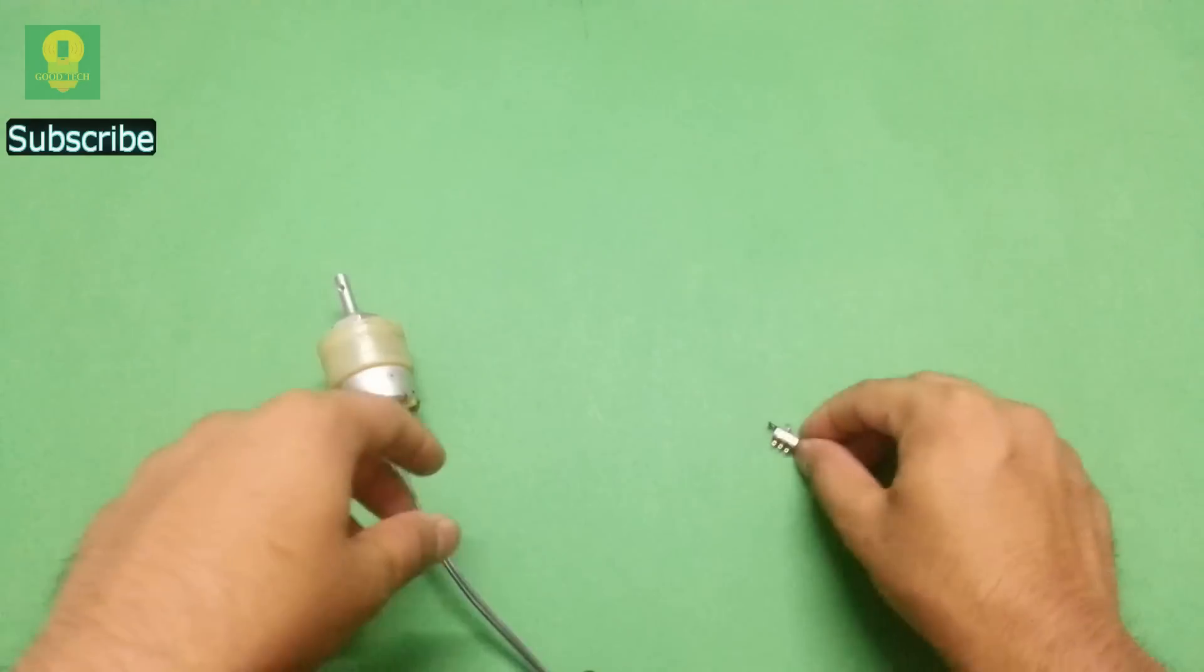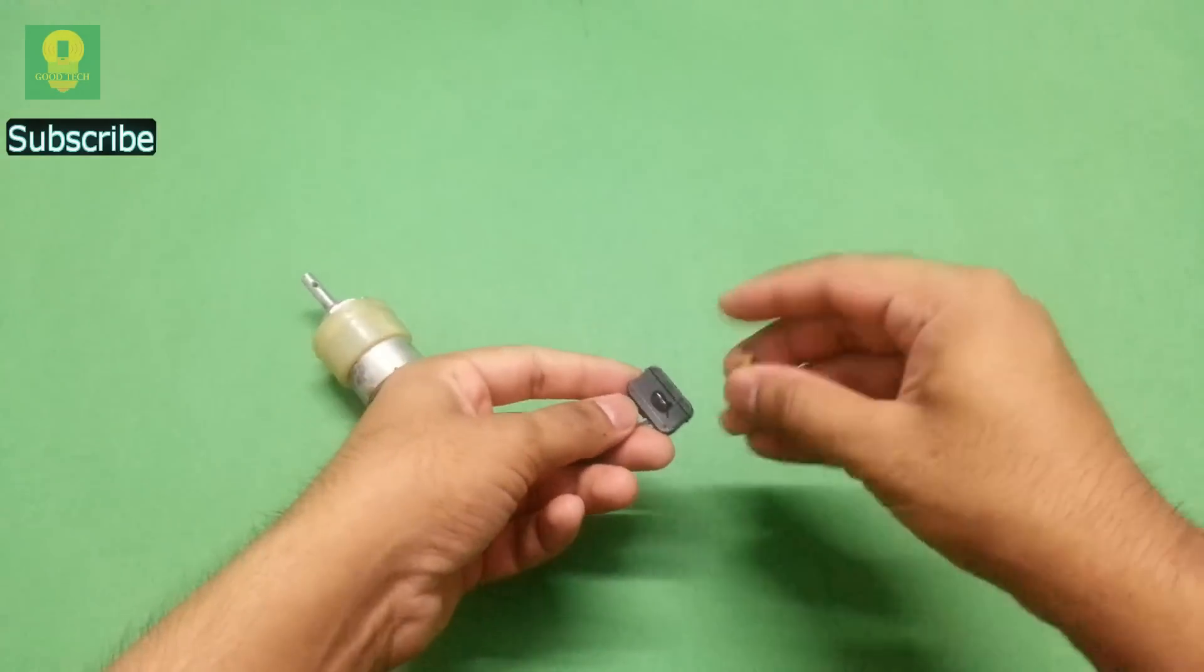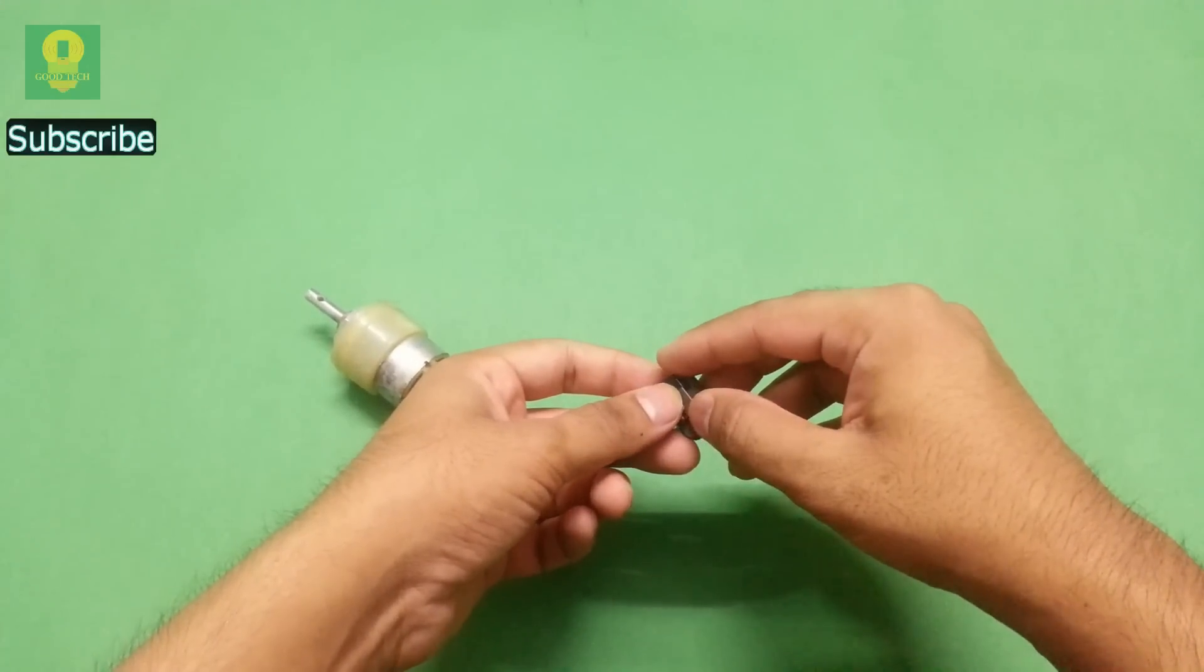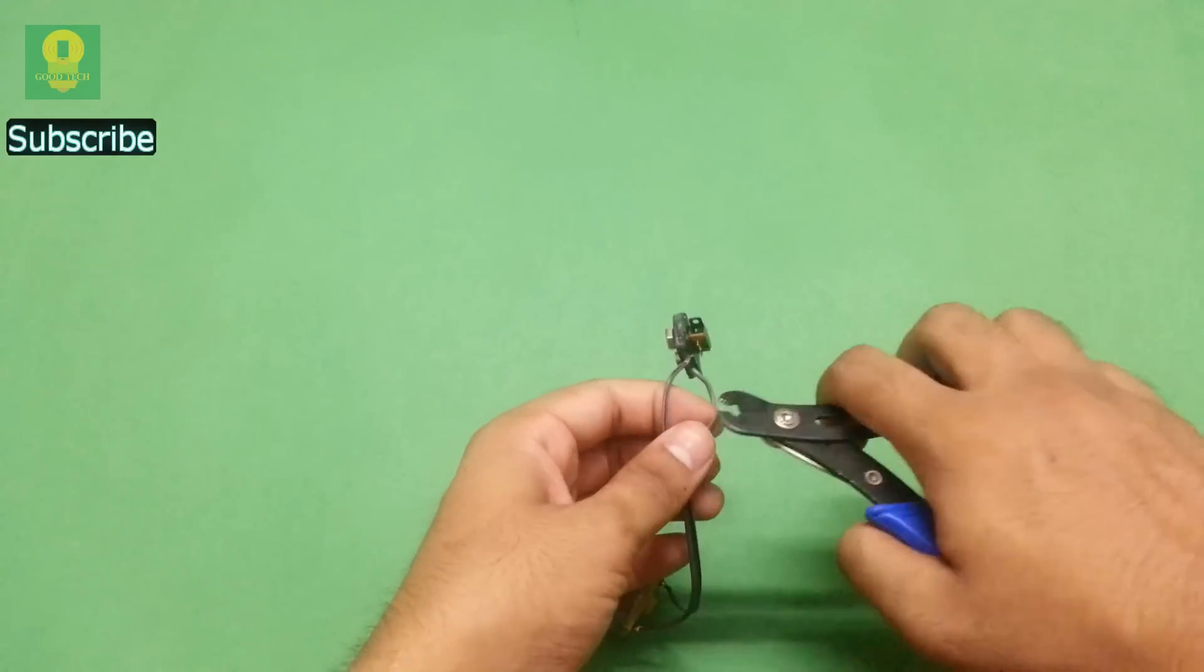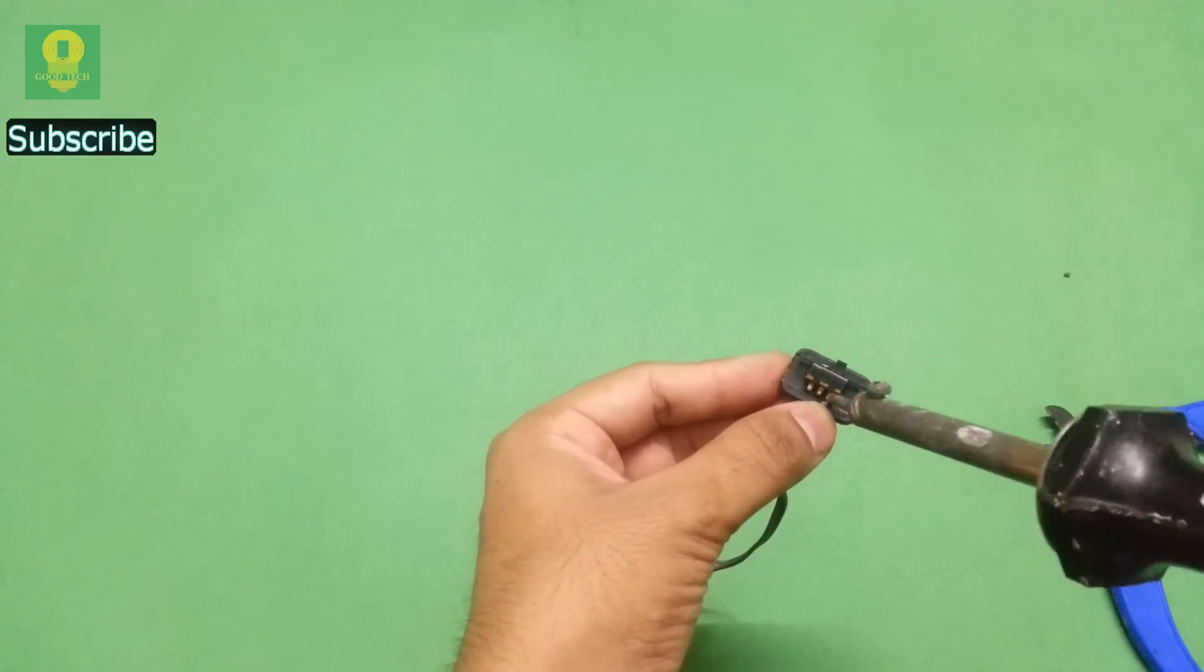Take an on off switch. Using hot glue, attach the switch to the battery connector. Cut one of the wires and solder the wire to the switch.